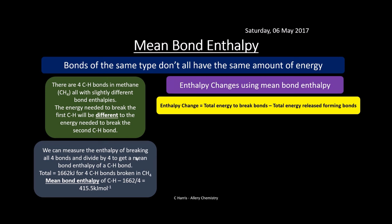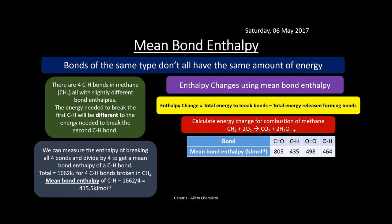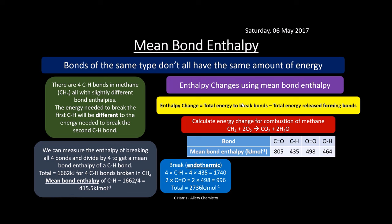For enthalpy changes using mean bond enthalpy, the equation is: enthalpy change equals the total energy needed to break the bonds minus the total energy released from forming them. Calculate the energy change for the combustion of methane: methane plus oxygen gives carbon dioxide and water. We've got four C-H bonds — 4 × 435 = 1740 — and two O=O bonds — 2 × 498 = 996. Total energy to break the bonds is 2736 kilojoules per mole.